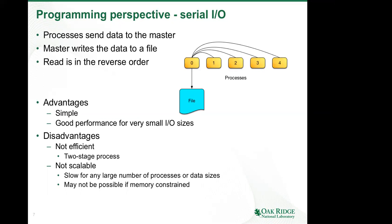So what's the use case for serial IO? Imagine you have a configuration file or some staging input file you want to share with many processes. Having every process issue open, read, and close for such a small amount of data might impose undue burden on the parallel file system. Instead, you can ask the master process to read the file and do an MPI broadcast to share the information with the rest of the processes. This essentially translates an IO-bound problem into a communication problem, and assuming you have a high-performance interconnected network, this is an acceptable solution for certain use cases.